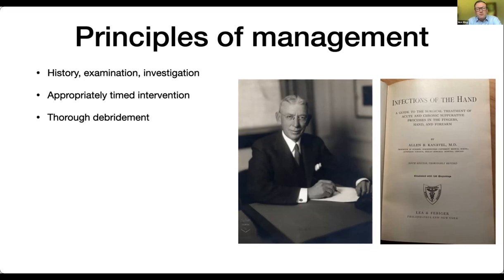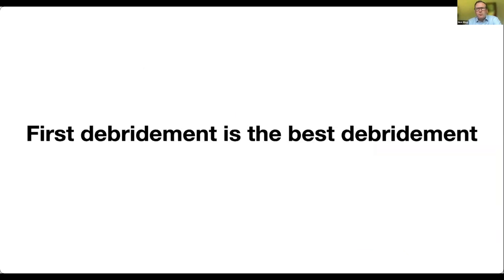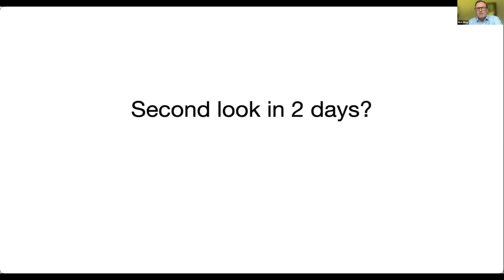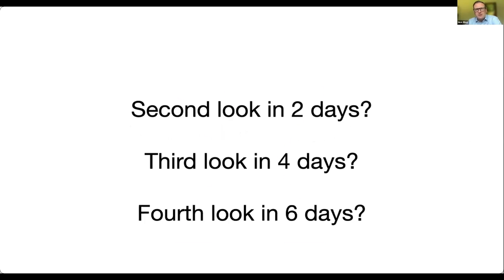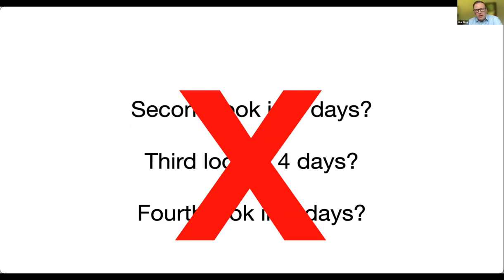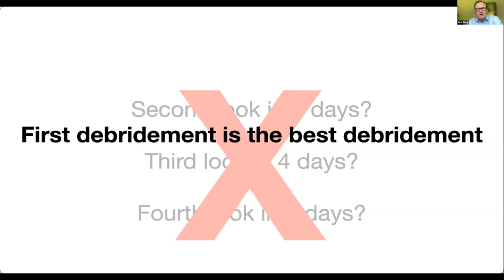Timing of intervention is key. If you have somebody who's unwell, they need to go to theatre quickly. But if the patient is not unwell, a thorough debridement by a surgeon who is awake is often better. And as Jonathan touched on, the first debridement is the best debridement. What we often find at the bottom of an operating note is that the surgeon puts 'second look in two days,' then the patient goes back for another wash, gets a third look in four days, and a fourth look in six days. This isn't great — it elongates the treatment pathway and just diverts the problem to a different surgeon.